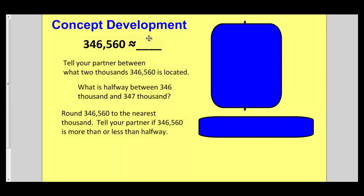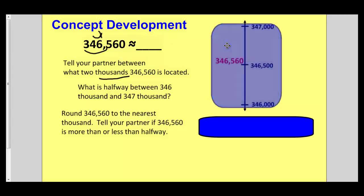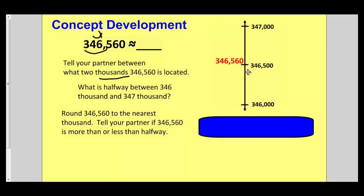Try this one: 346,560, and we are rounding to the nearest thousand. This can be a little tough sometimes when you have 100,000s and you're rounding to the nearest thousand. Just focus on how many thousands are in the number. Make your vertical number line, think about what would be 1,000 more and the midway point. Pause the video and try by yourself. There are 346,000s; one more thousand is 347,000. The midway point shows it's just barely over halfway, so it rounds to 347,000.